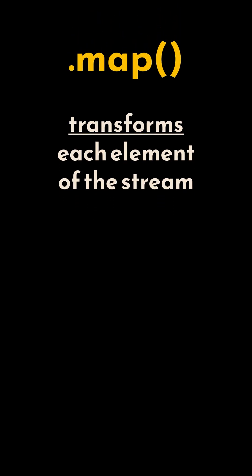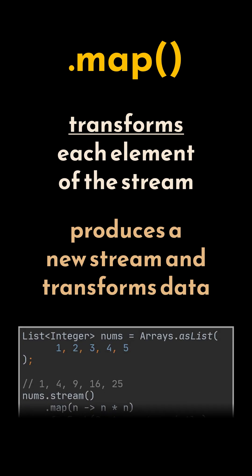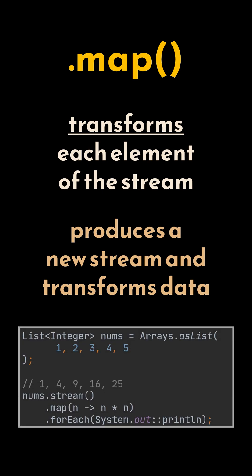The map method in Java streams is an intermediate operation used to transform each element of the stream using a given function. It produces a new stream consisting of the results of applying the function to the elements of the original stream. This is typically used for data transformation. In this example, the map method squares each element, resulting in a stream containing the squares of the original numbers.